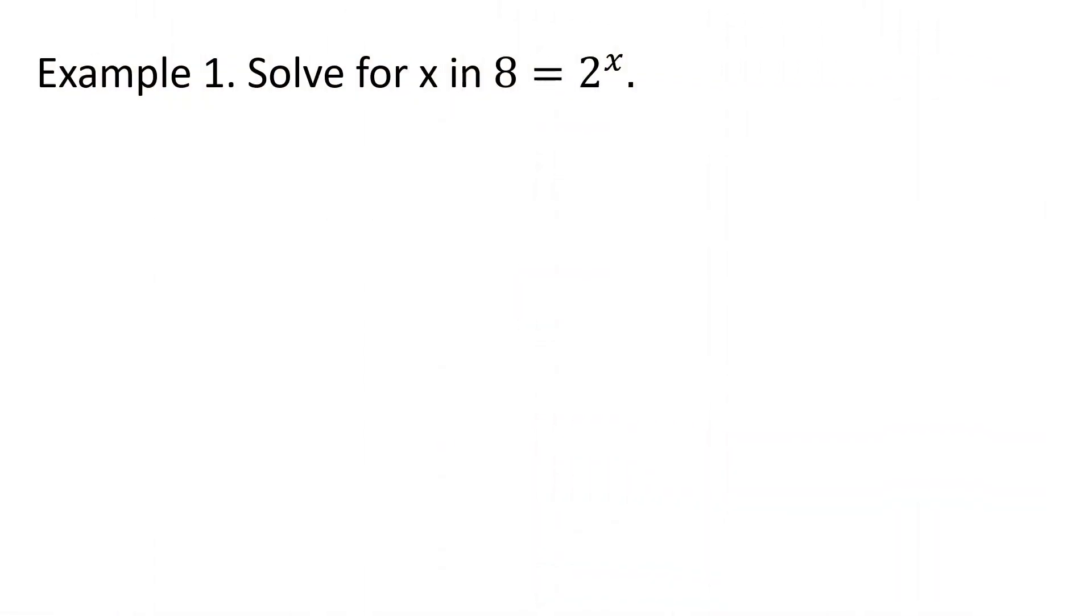Example 1: Solve for x in 8 equals 2 to the x. Solving an exponential function differs from solving other types of functions, merely because the unknown which we are going to solve for, which is usually x, acts or functions as an exponent in the equation. So the goal is to make the bases equal first because this is an equation. This equal sign tells us that the left-hand side is equal to the right-hand side. So let us begin.